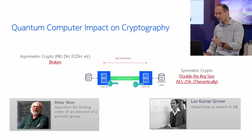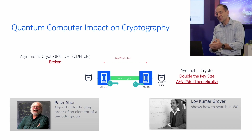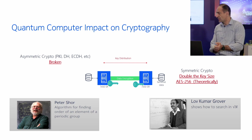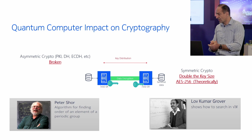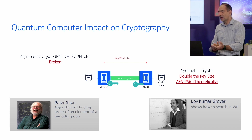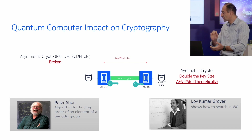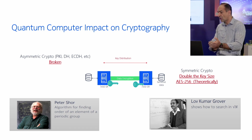Before we move on, I want to bring this picture to your attention. There are two gentlemen behind me — these are the ones who actually came up with algorithms to break asymmetric encryption with quantum computers, and to also weaken symmetric encryption with quantum computers. When it comes to asymmetric encryption, examples include Diffie-Hellman and RSA, which we use in TLS-type encryption — for instance, when you connect to your bank account using HTTPS, that's TLS. All those are broken by quantum computers.